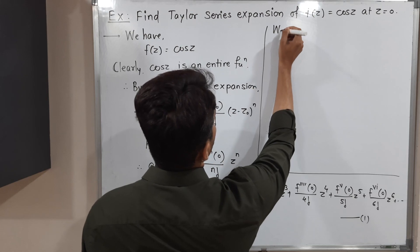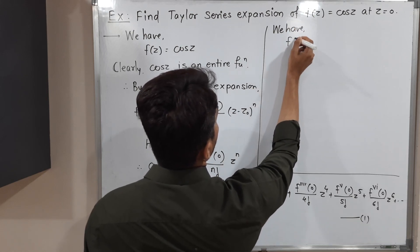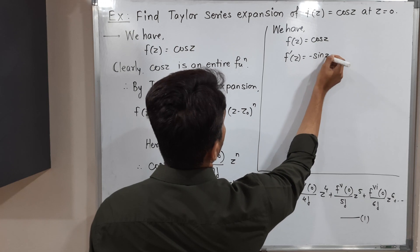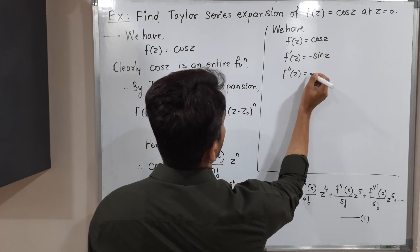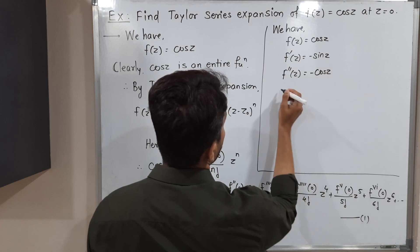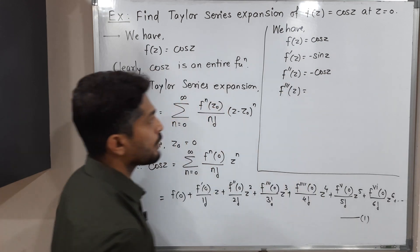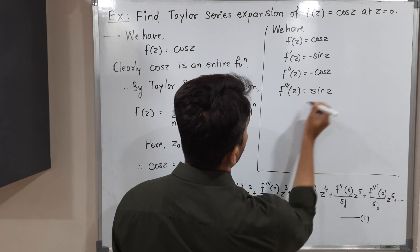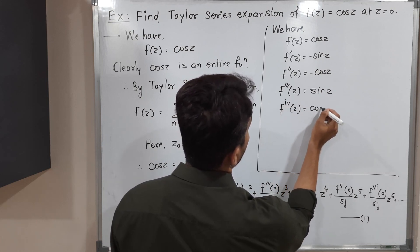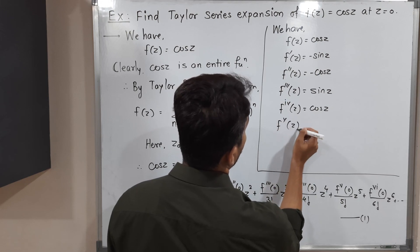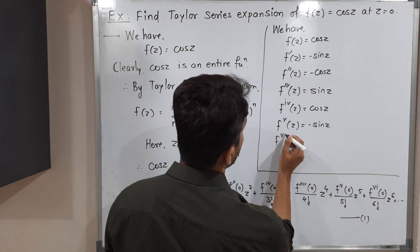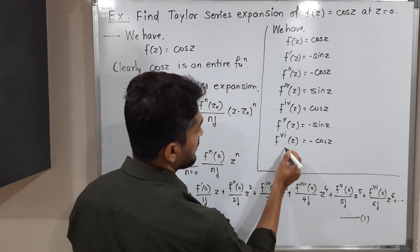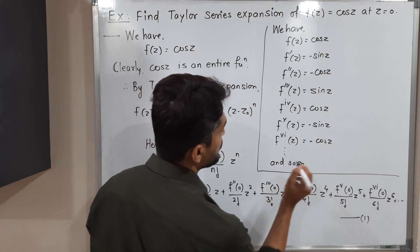Starting with f(z) = cos(z): the first derivative is −sin(z); the second derivative is −cos(z); the third derivative is +sin(z) (since the negative of −sin gives +sin); the fourth derivative is cos(z); the fifth derivative is −sin(z); and the sixth derivative is −cos(z), and so on.